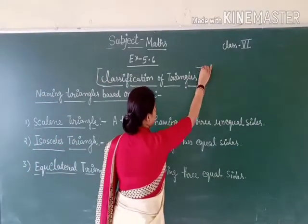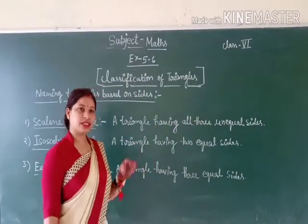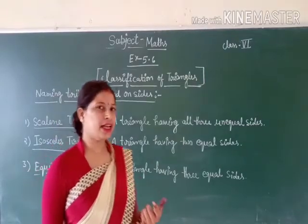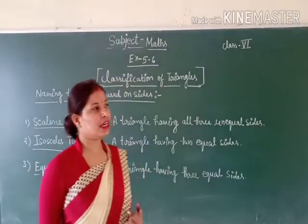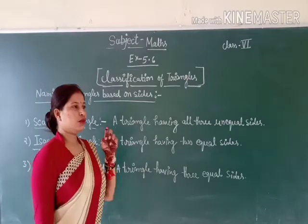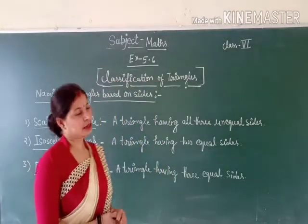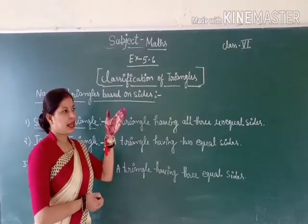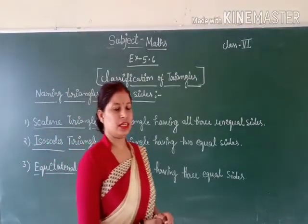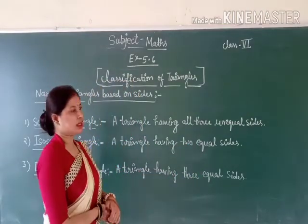Students, triangles have a classification. What types? Based on sides and based on angles. For example, if it's a 90-degree angle triangle, what do we call it? A right angle triangle. Now we can also call it an 'acute angle' based triangle — it means a 90-degree angle triangle.